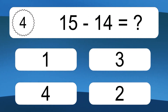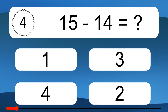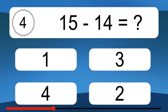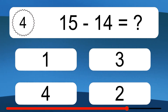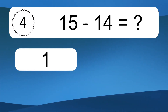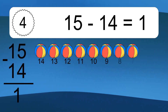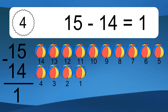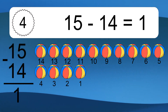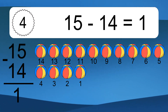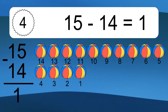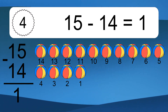15 minus 14 equals what? 15 minus 14 equals 1. Let's count it: 14, 13, 12, 11, 10, 9, 8, 7, 6, 5, 4, 3, 2, 1.